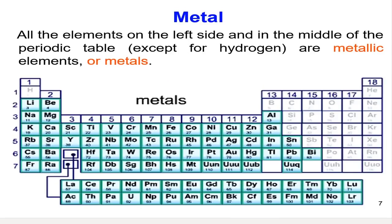Most of the elements are metals. All the elements on the left side and in the middle of the periodic table except for hydrogen are metallic elements or metal. Metallic elements are shiny and they are good conductors.